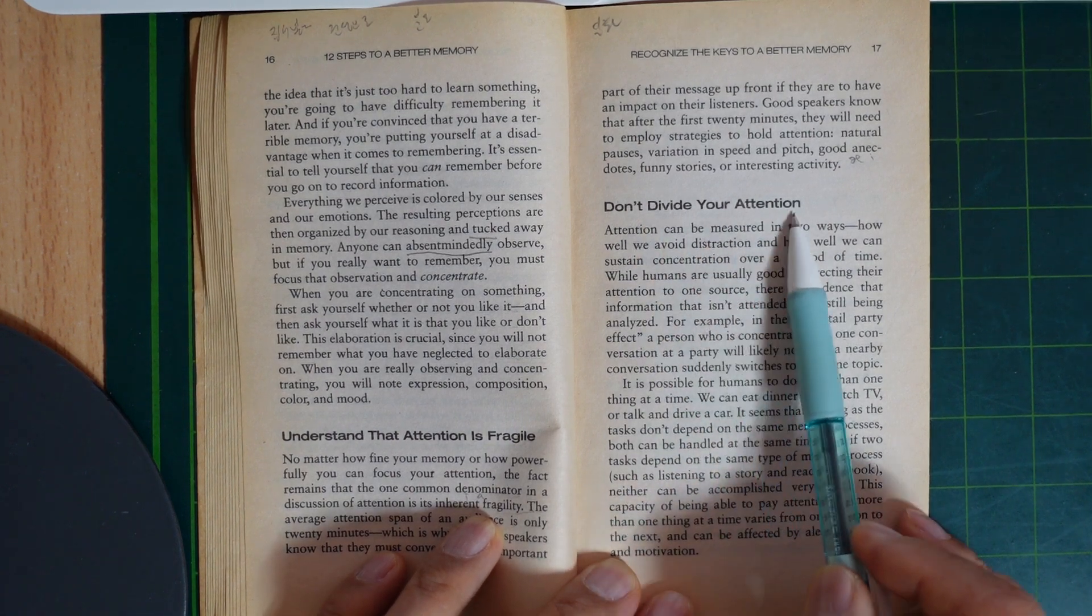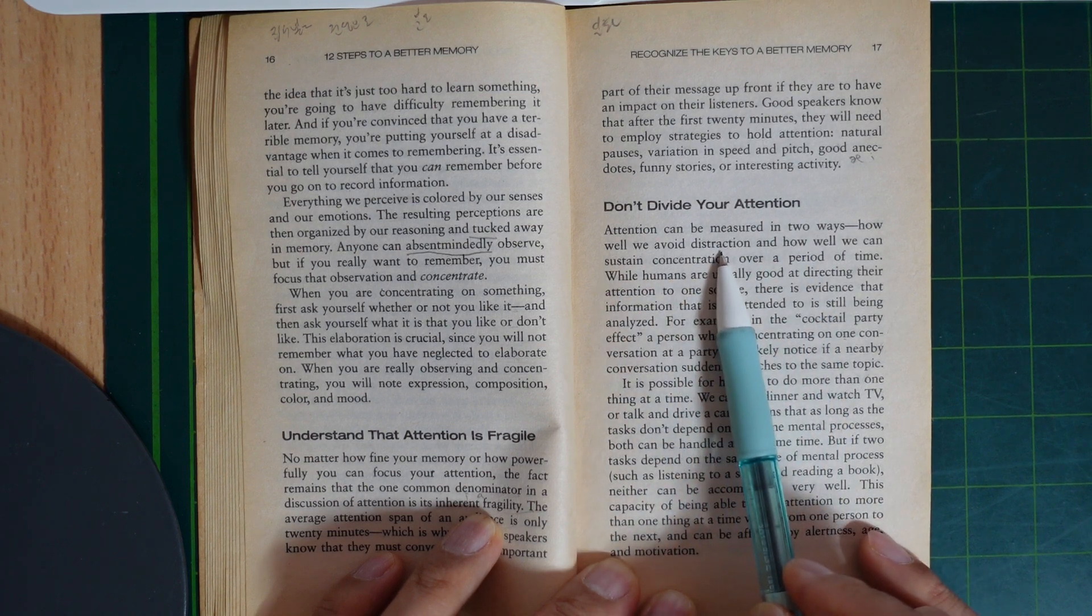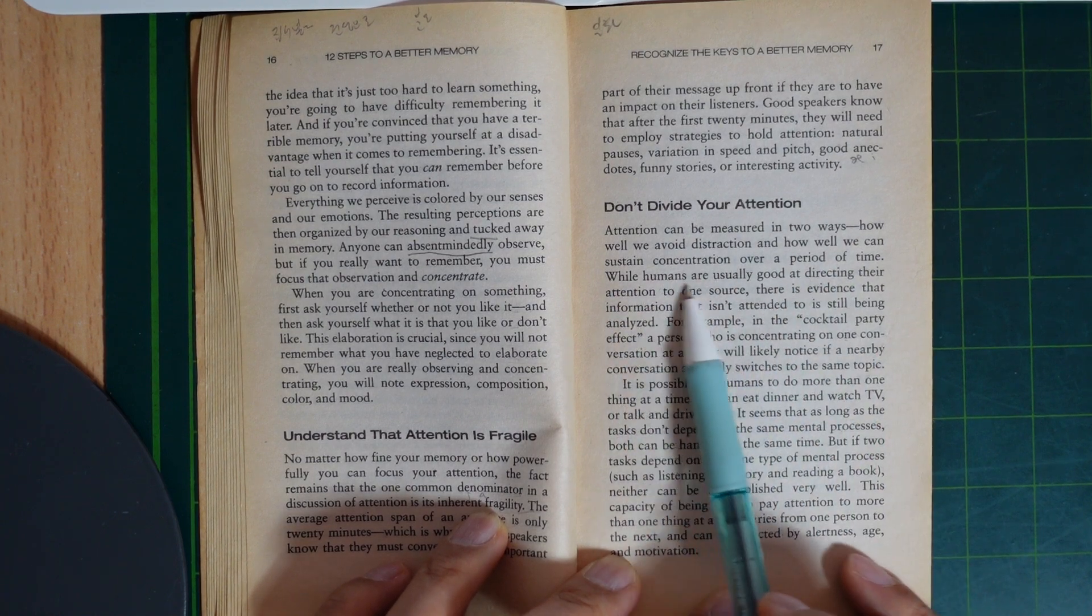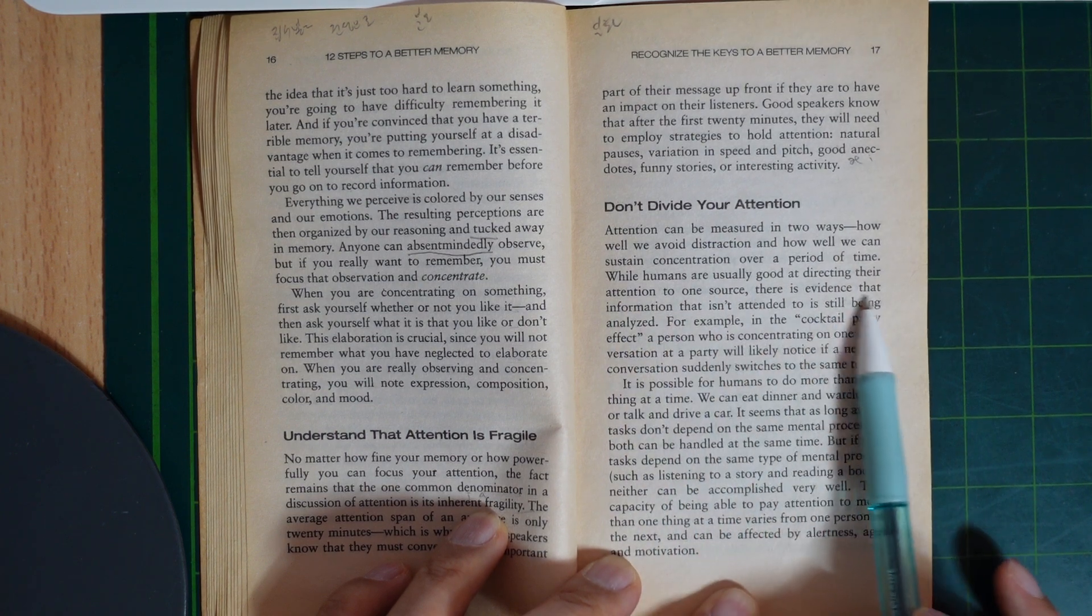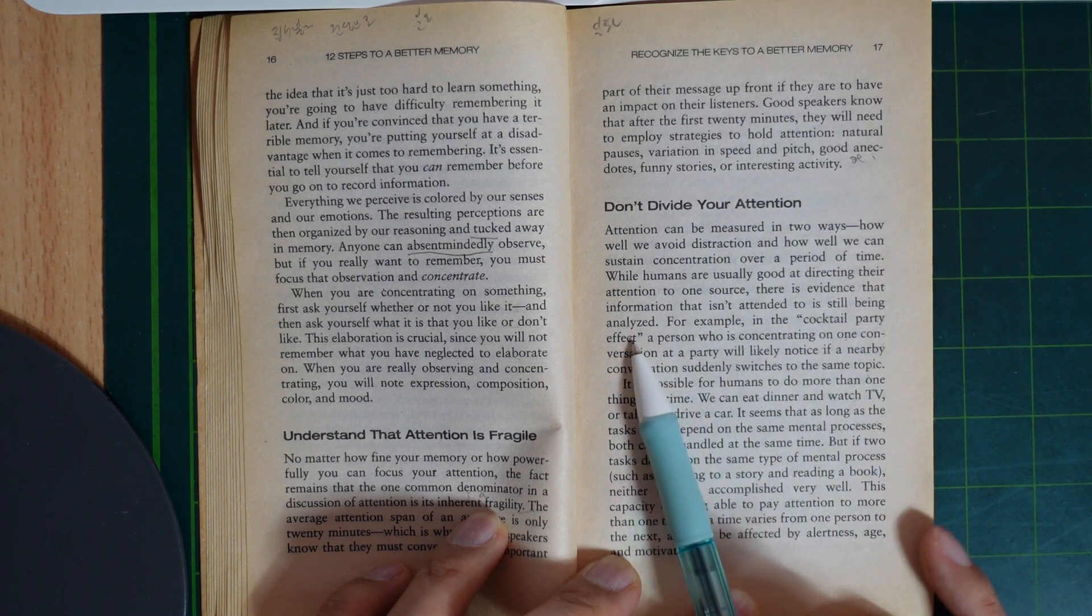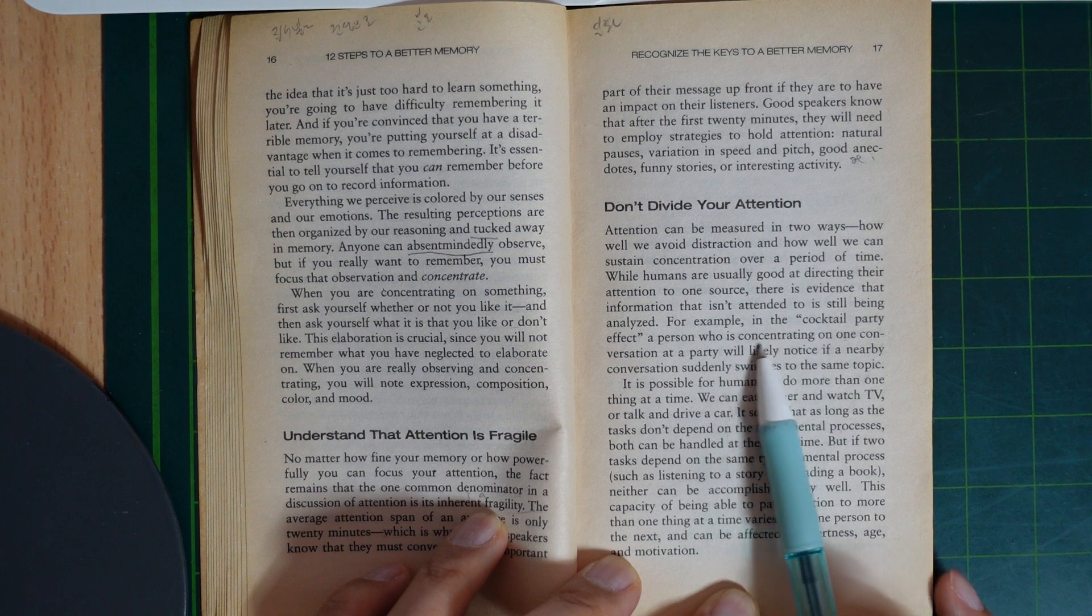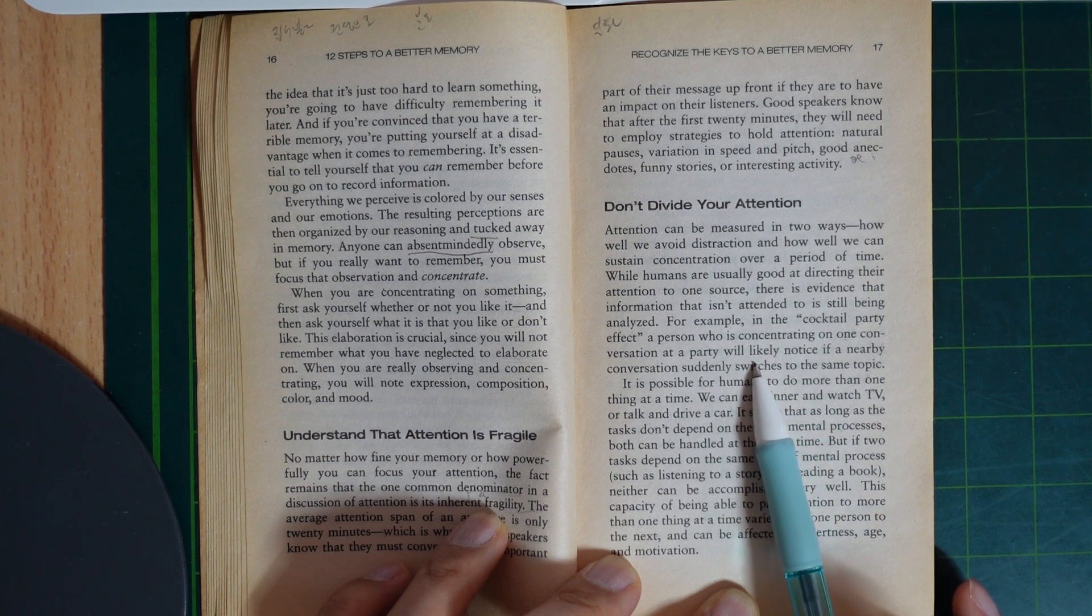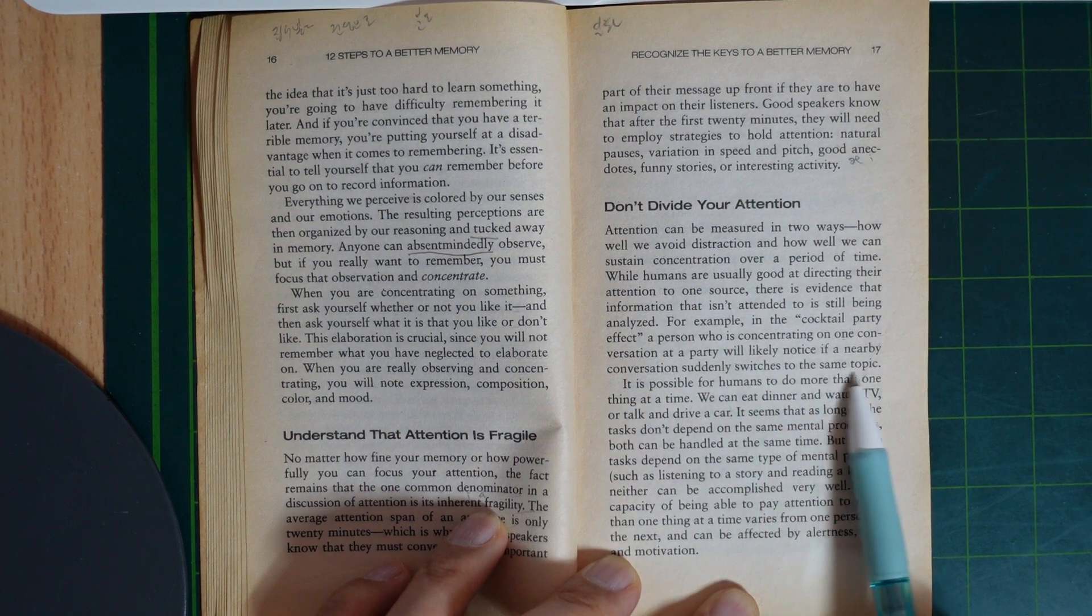Don't divide your attention. Attention can be measured in two ways: how well we avoid distraction and how well we can sustain concentration over a period of time. While humans are usually good at directing their attention to one source, there is evidence that information that isn't attended to is still being analyzed. For example, in the cocktail party effect, a person who is concentrating on one conversation at a party will likely notice if a nearby conversation suddenly switches to the same topic.